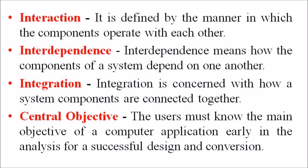The third one is interdependence. Interdependence means how the components of a system depend on one another. For proper functioning, the components are coordinated and linked together according to a specified plan. The output of one subsystem is required by another subsystem as input.